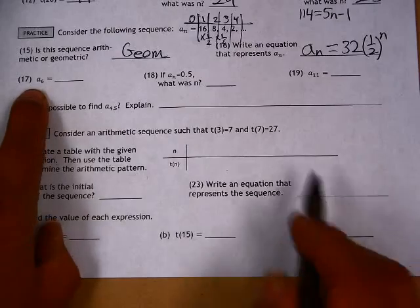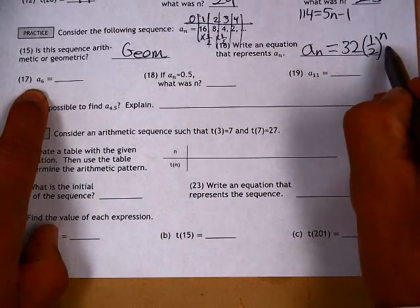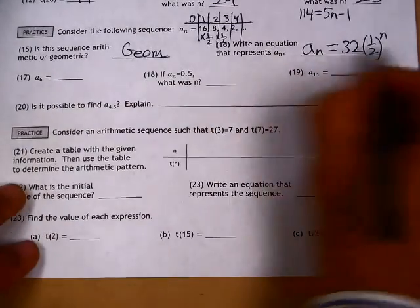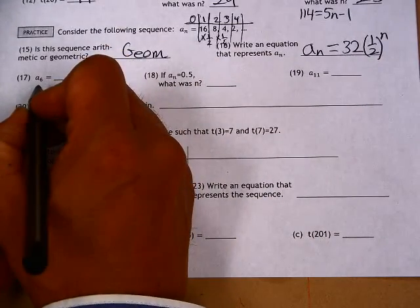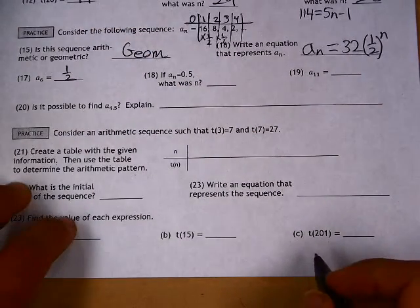So a of 6, we could either continue this table out like this, or we plug in a 6 right here. If I plug in a 6 right here, I will end up with a value of one half.